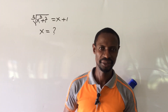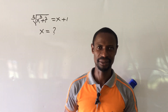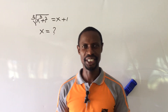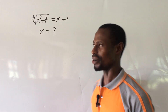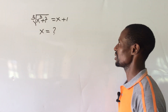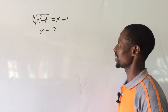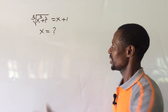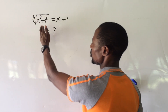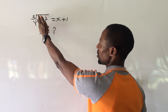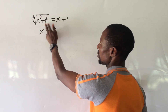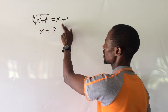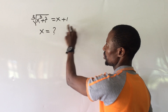Welcome everyone to my channel. Today we have a challenge on the board — it's a radical equation. The question says: the cube root of x to the power of 3 plus 7 equals x plus 1.